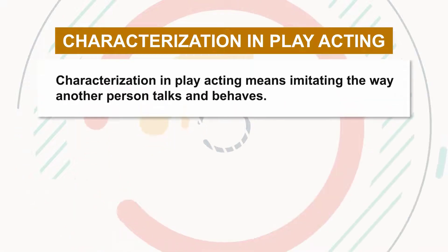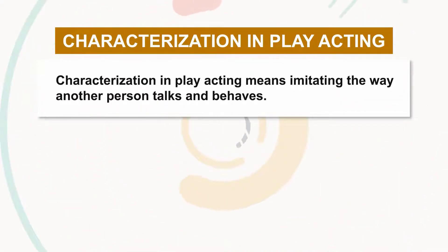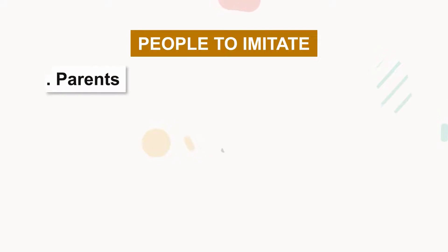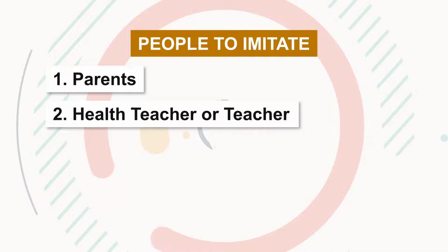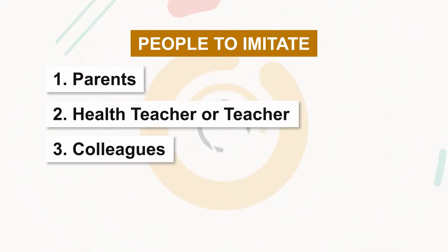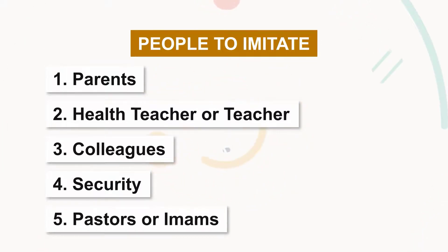Characterization in play acting means imitating the way another person talks and behaves. People to imitate: Number 1, Parents. Number 2, Head teacher or teacher. Number 3, Colleagues. Number 4, Security. Number 5, Pastors or Imams.